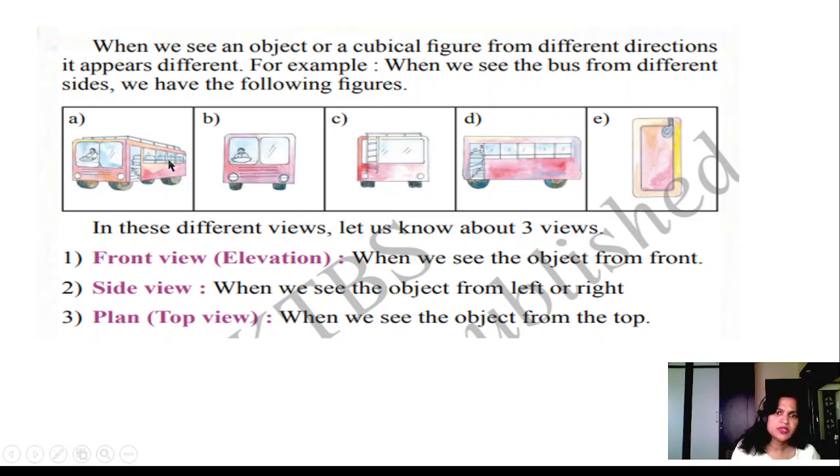We have the following figures. From the front, it looks like this. Side view, it looks like this. From the back, bus looks like this. And this is top view. Front view is an elevation. Side view is when we see the object from the left or right. Plan or top view is when we see the object from the top.